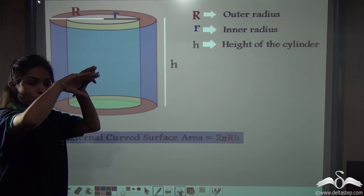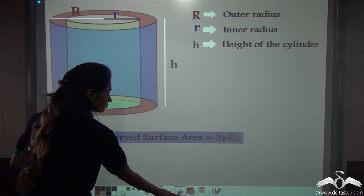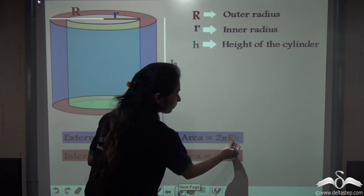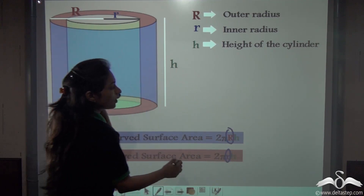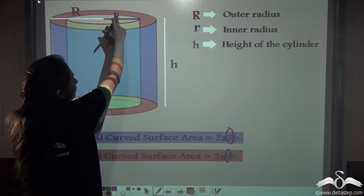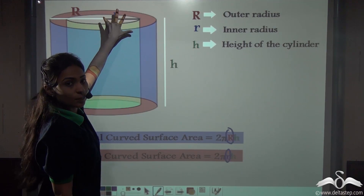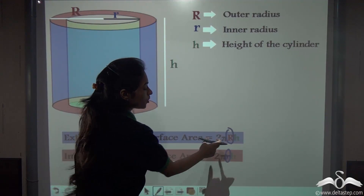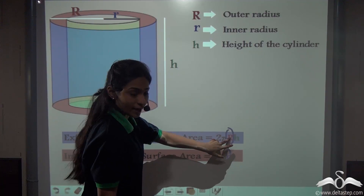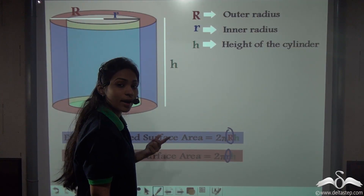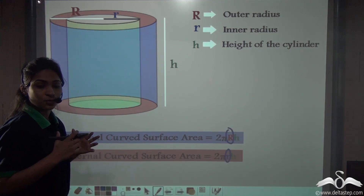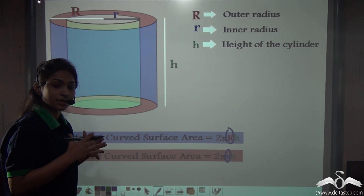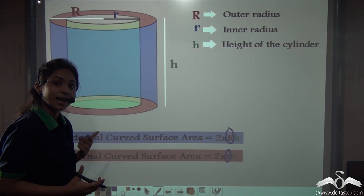Now, what about the inner surface? This hollow cylinder has some inner surface as well. The internal or inner curved surface area will again use the formula 2πrh, but here we replace r with small r. This is because the inner curved surface area is calculated using small r as the radius, since the inner circle has radius small r. So keeping the formula 2πrh, we just replace the radius with small r for the internal curved surface area.